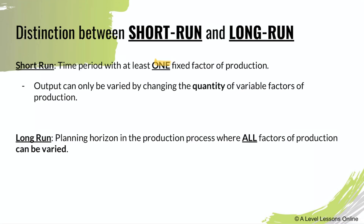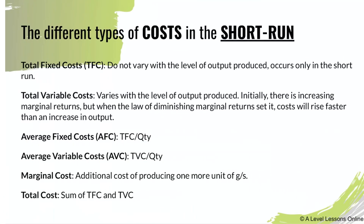Your factors of production are land, labor, entrepreneurship, and capital. In the short run, output can only be varied by changing the quantity of variable factors of production. There has to be at least one fixed factor of production while the rest can change. The long run, on the other hand, is referred to as the planning horizon — your potential output in the long run — whereby all factors of production can actually change. There is no fixed factor of production; for instance, land can also change in the long run.